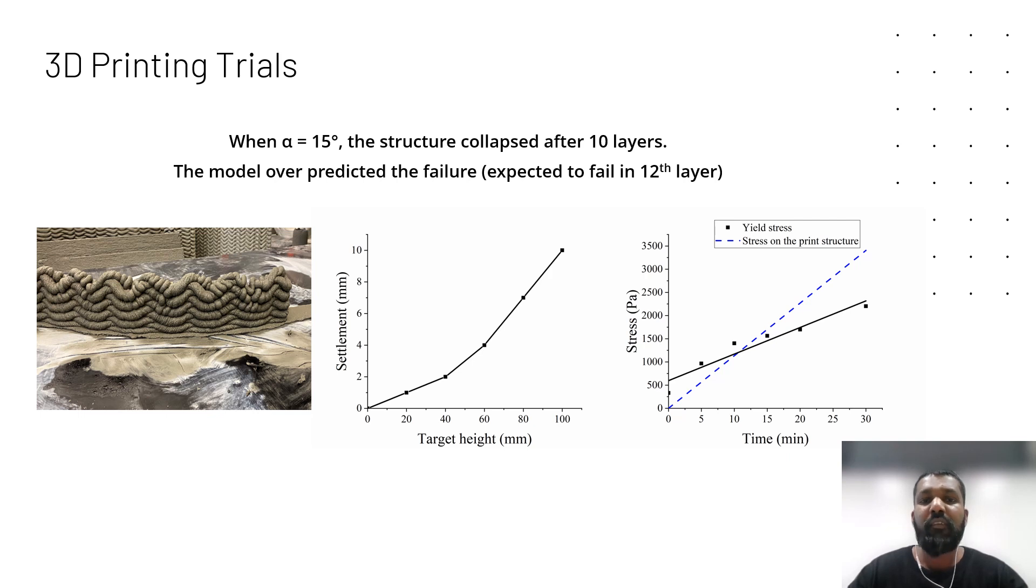Then we move to our second design, which is exactly the same but with a higher overhanging angle which is 15 degrees. As you can see, the design collapsed right away within the first 10 layers. We plotted the settlement at every other layer at the end and found that the increase is larger with the height. So that's an indication of irreversibility.